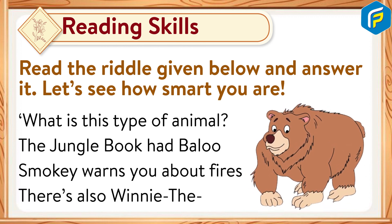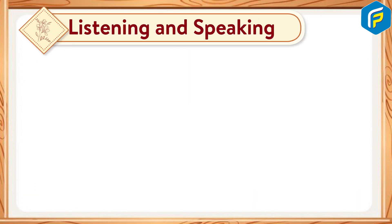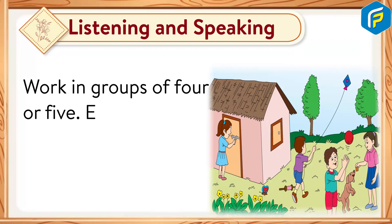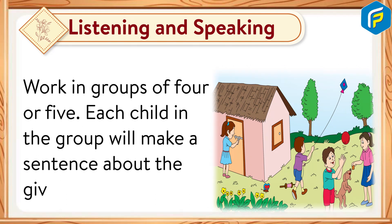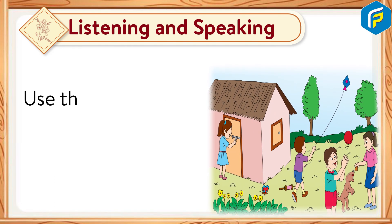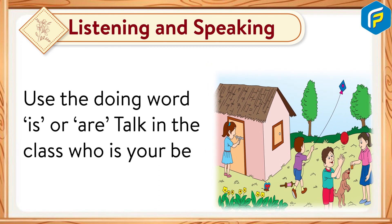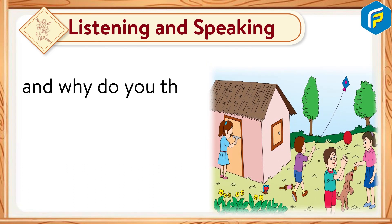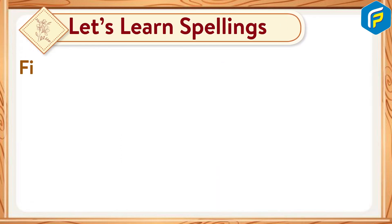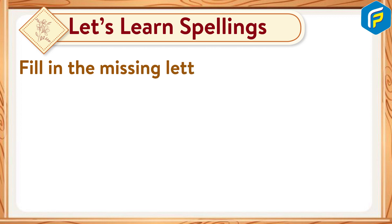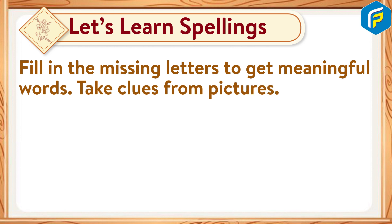...there is also Winnie the Pooh. Listening and speaking: Work in groups of 4 or 5. Each child in the group will make a sentence about the given picture using the doing word 'is' or 'are'. Talk in the class: who is your best friend and why? Let's learn spellings — fill in the missing letters to get meaningful words. Take clues from pictures.